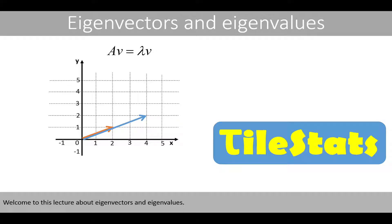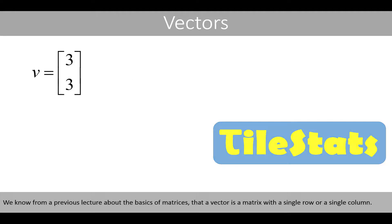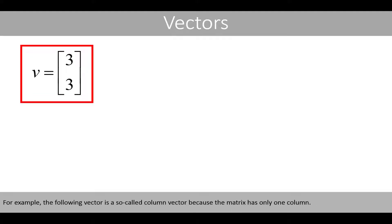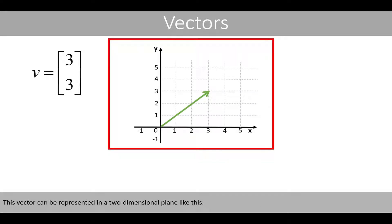Welcome to this lecture about eigenvectors and eigenvalues. We know from a previous lecture about the basics of matrices that a vector is a matrix with a single row or a single column. For example, the following vector is the so-called column vector because the matrix has only one column. This vector can be represented in a two-dimensional plane like this.